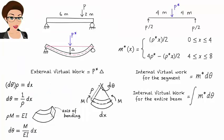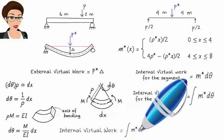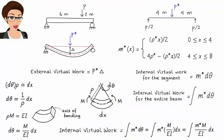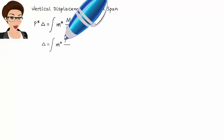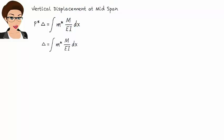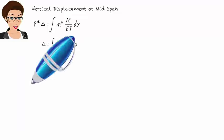Finally, we can write the expression for internal virtual work for the entire beam as the integral of M star times M over EI dx. It is important to keep in mind that M star is the bending moment equation due to the virtual load, and M is the bending moment equation due to the real load. The virtual work principle can now be written accordingly. If we assume a unit virtual load, we can determine delta using the equation: delta equals the integral of M star times M over EI with respect to x, where both M star and M are in terms of x.